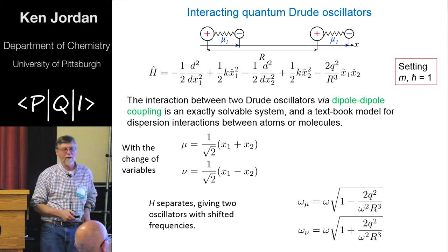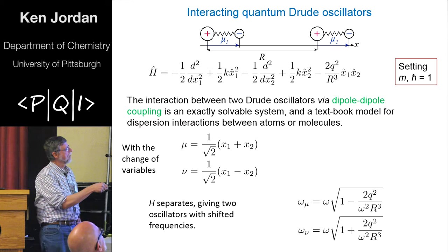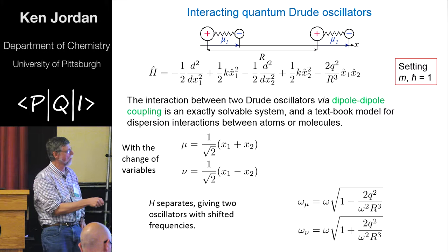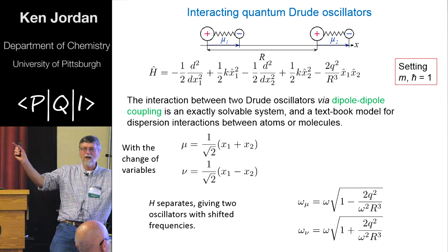So you can find this in many textbooks, but let me just remind you, if you have two coupled Drude oscillators, it's a change of variables to find the exact dispersion energy for the system. So you introduce these new variables that involve x1 plus x2, x1 minus x2, and you get the frequencies for the interacting system.